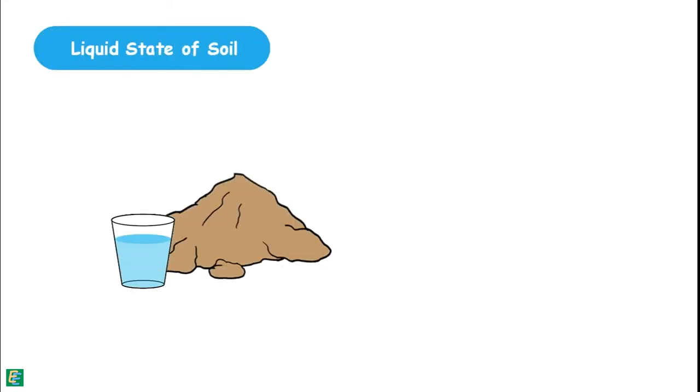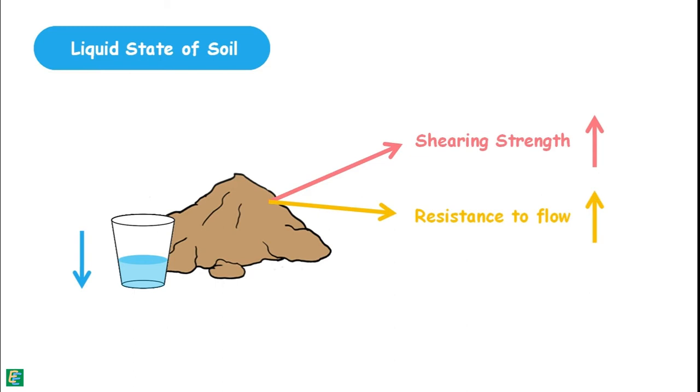In liquid state, water content of the soil is such that it behaves like liquid and offers no resistance to flow. When water content drops, it gains shear strength and develops resistance to flow. After reaching certain water content named as liquid limit, soil enters into plastic state.